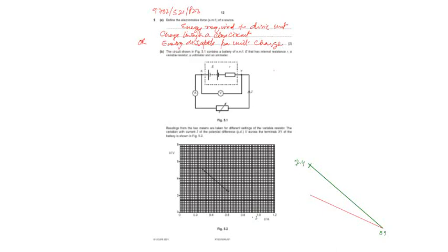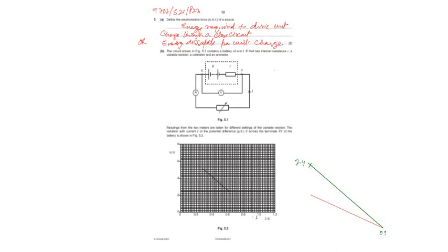9702 May June 2021, paper 2, variant 3, and the topic is the DC circuit, potential divider and the onslaught.